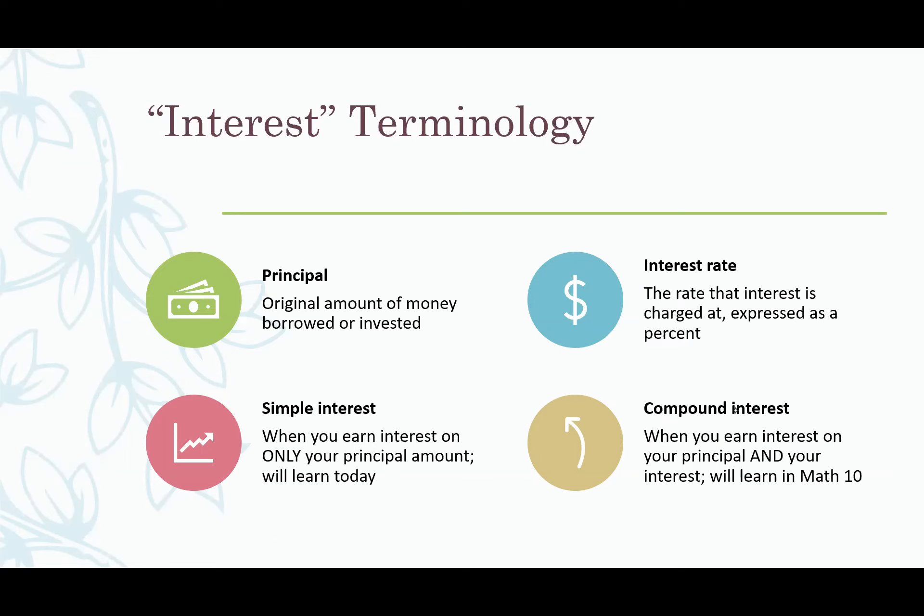There's two main types of interest. Simple interest which we'll learn today, and this is when you earn interest only on your principal or original amount. And there's also compound interest. This you'll learn next year in grade 10. Compound interest is when you earn interest not only on your principal but also on the interest that you're earning. You earn more money with compound interest and it's a lot more common, but we'll learn simple interest first as an introduction.